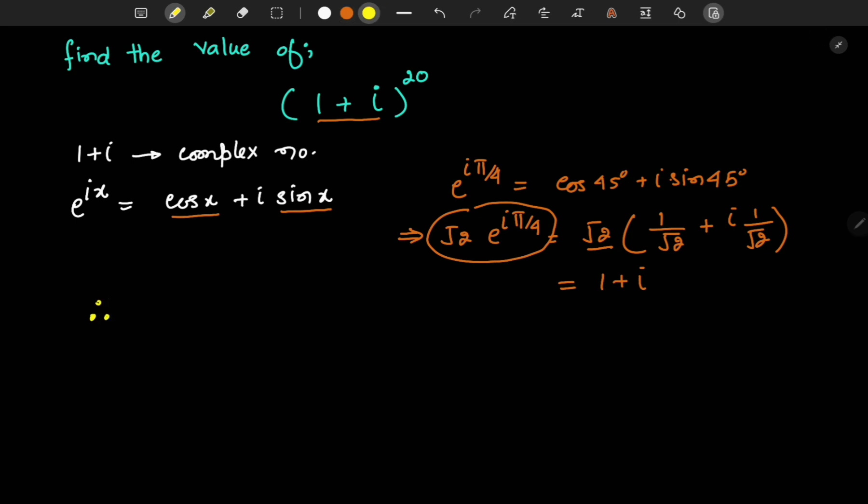Therefore, (1 + i)^20 = (√2·e^(iπ/4))^20 = (√2)^20·e^(i5π).